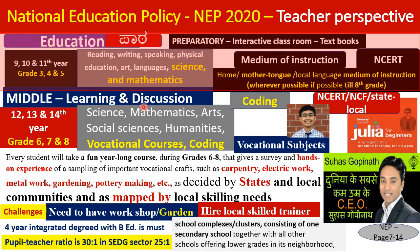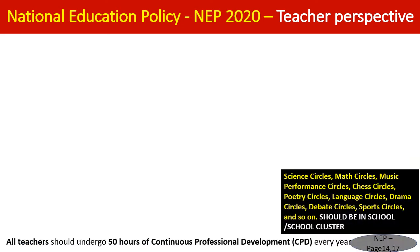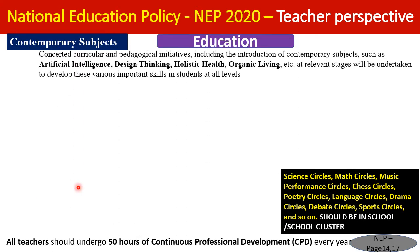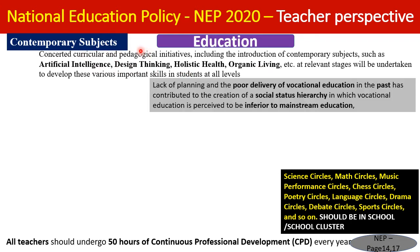At the Secondary Level, contemporary subjects are given more importance — artificial intelligence, design thinking, holistic health, and organic living are to be in the curriculum. Earlier vocational courses did not succeed due to poor deliverability and poor planning. NEP 2020 specifies that course delivery must be very interesting, impactful on society and students.